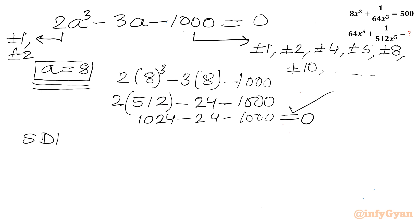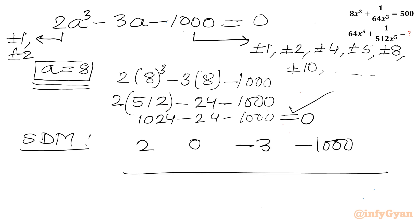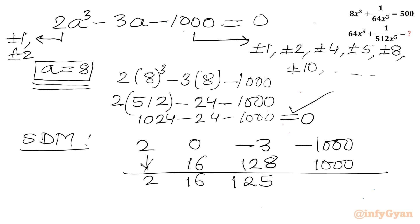Now let's use synthetic division. Writing all coefficients of the cubic equation: 2, 0, -3, -1000. Starting with the leading coefficient 2: 8 × 2 = 16; 8 × 16 = 128, addition gives 125; 8 × 125 = 1000, addition gives 0. So we have the coefficients for the resulting quadratic equation.